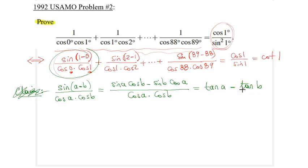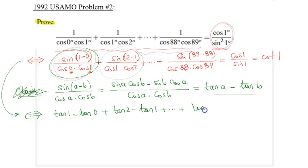Therefore, that initial expression is simply tangent 1 minus tangent 0, plus the second expression is tangent 2 minus tangent 1, plus all the way to tangent 89 degrees minus tangent 88.